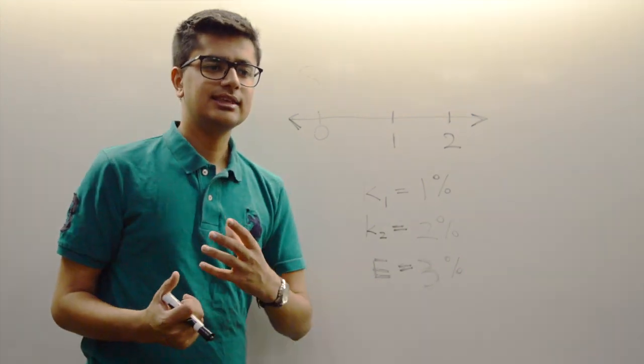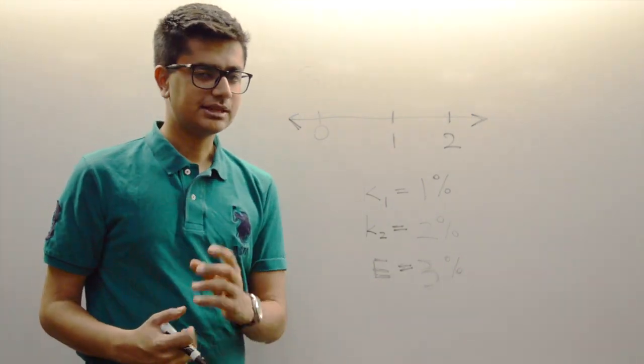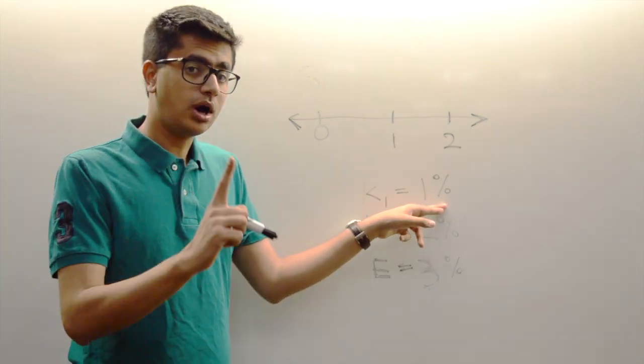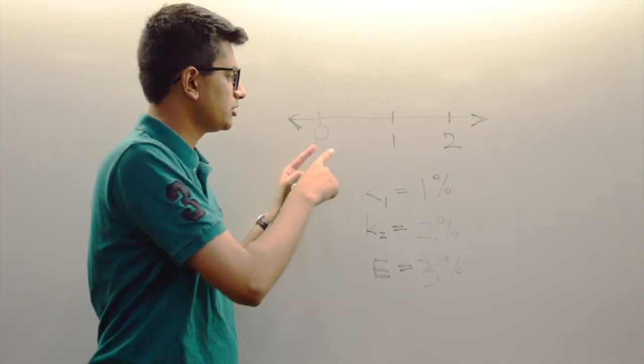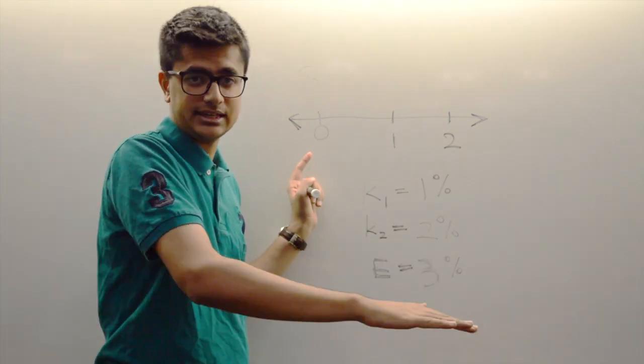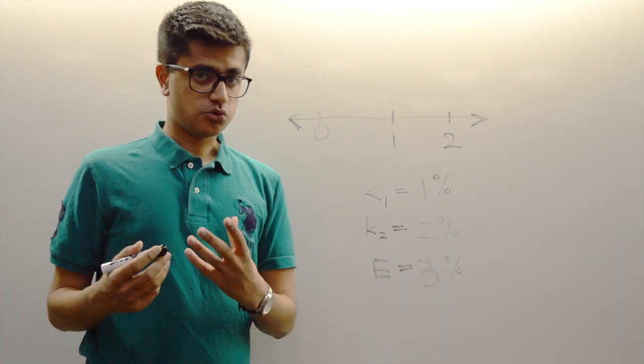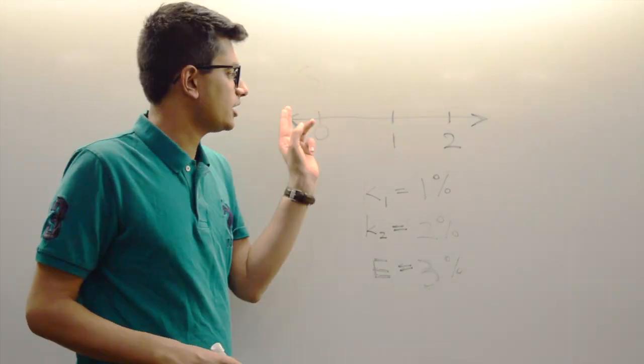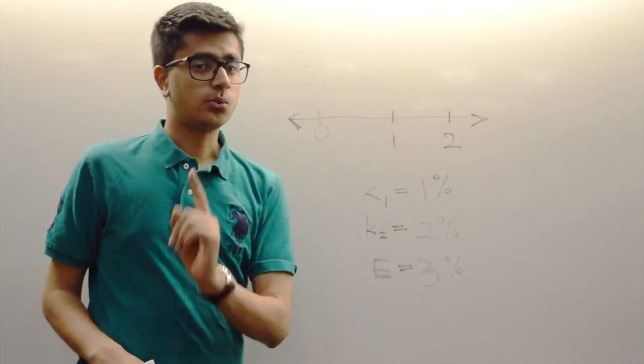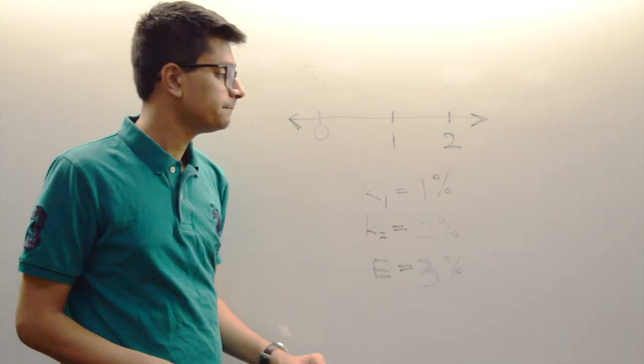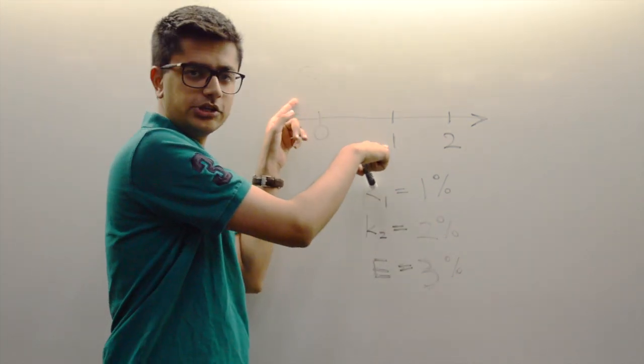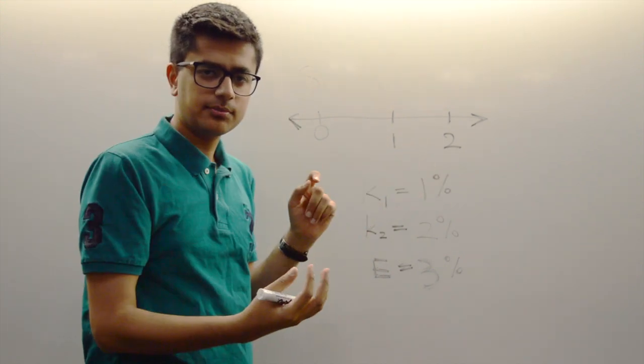On the other hand, the rollover strategy is a bit different. K1 represents the one-year spot rate, the interest rate from today to the end of the year. The rollover strategy is you can take the same $1, and instead of investing it for two years at the two-year rate, you could invest it for one year at the one-year rate. So you take your dollar and you invest it at 1% for one year. At the end of the year, you get your money back.